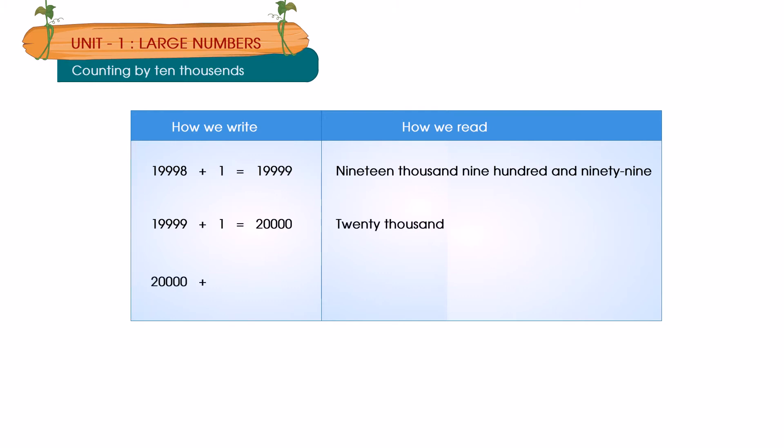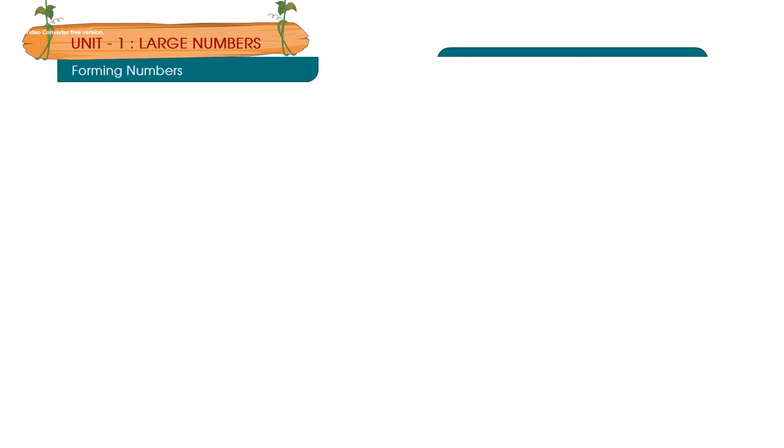20,000 plus 1 equals 20,001. 99,997 plus 1 equals 99,998. 99,998 plus 1 equals 99,999. 99,999 plus 1 equals 1,00,000.